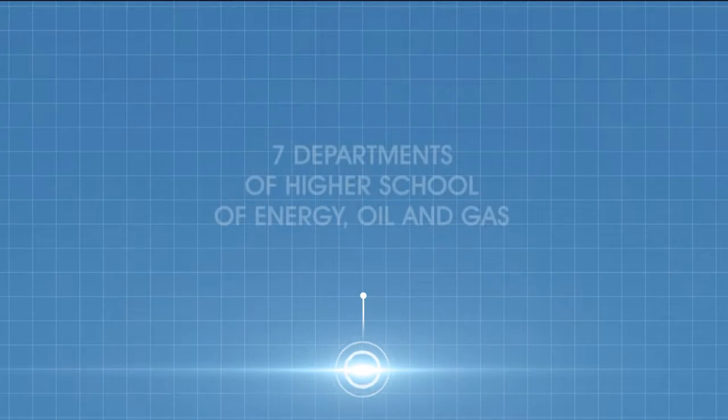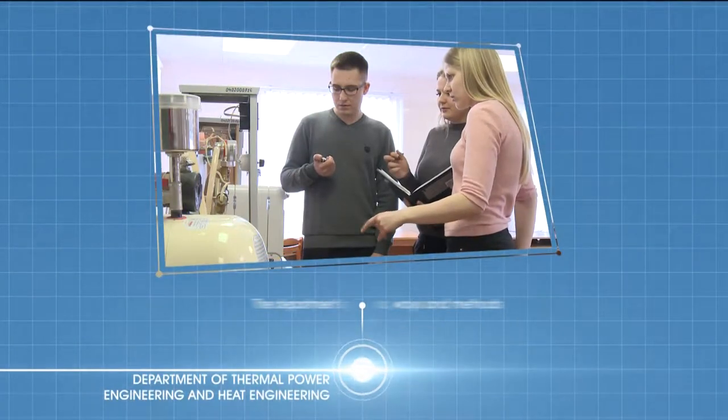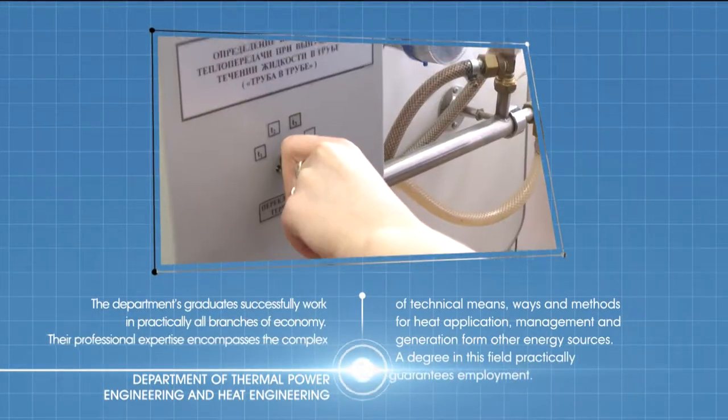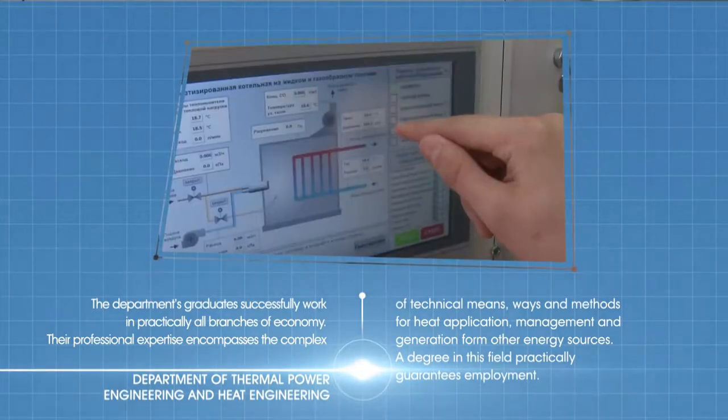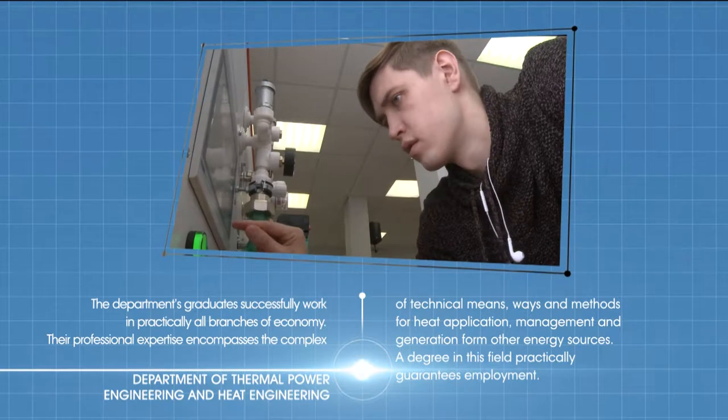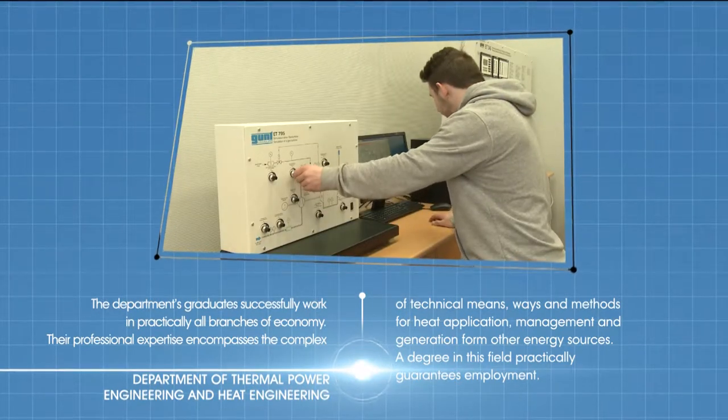The High School of Energy, Oil and Gas comprises seven departments. Department of Thermal Power Engineering and Heat Engineering: Development of the Russian economy has led to an increase in demand for specialists in thermal power engineering. The department's graduates successfully work in virtually all branches of economy.